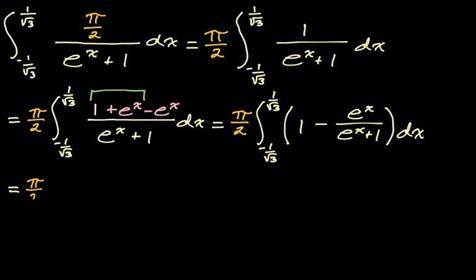So pi over 2. Now we're actually integrating. So the integral of 1 is going to be x. And then the second part is just a simple u substitution on the denominator. u is equal to e to the x plus 1, so du is e to the x dx. So it's a natural log. So minus the natural log, absolute value, e to the x plus 1. I'm putting the absolute value there. e to the x plus 1 is always positive, so I don't really need absolute value there, but I put it anyway.